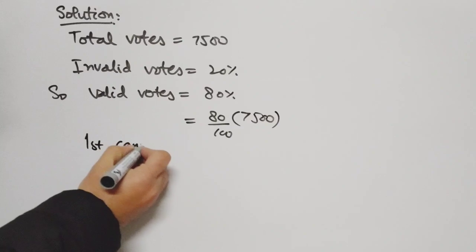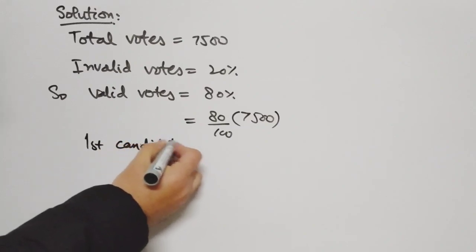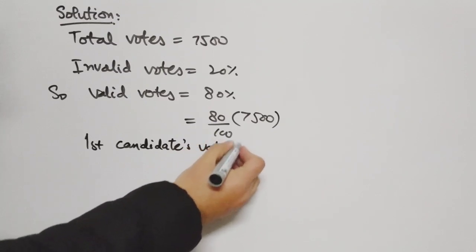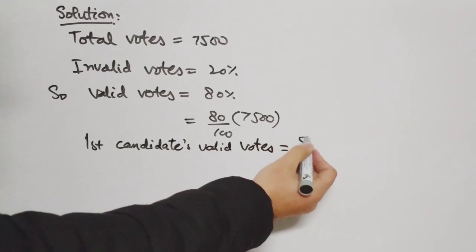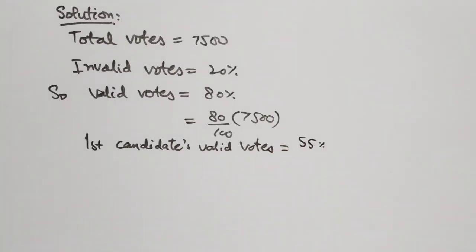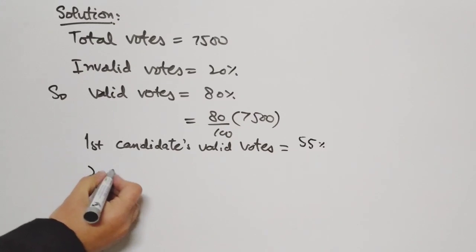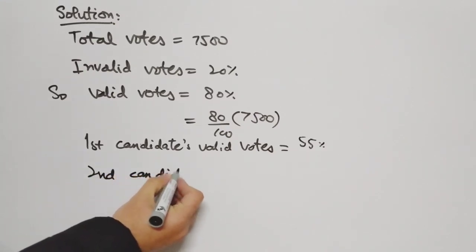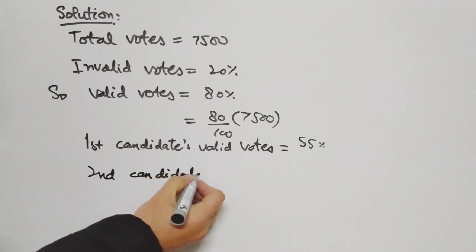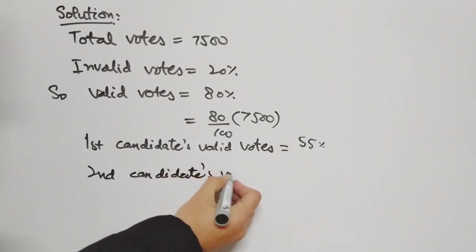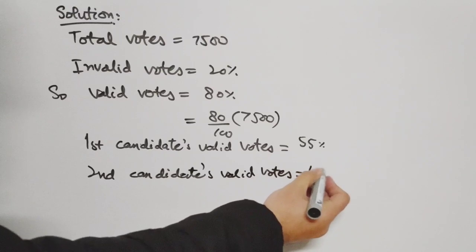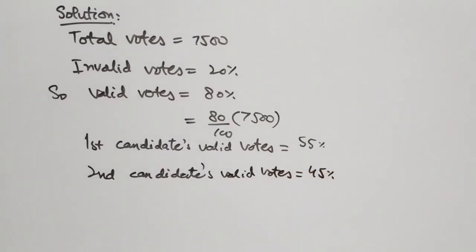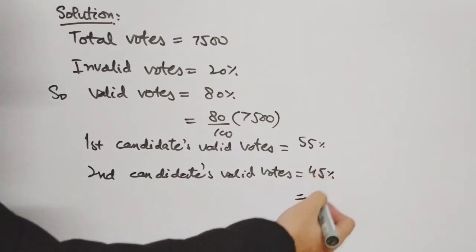Now, the first candidate's valid votes is equal to 55%. So the second candidate's valid votes will be 45%. We have to find number of the second candidate's valid votes. So that will be equal to 45% of the valid votes.